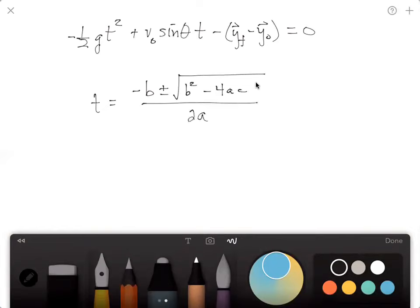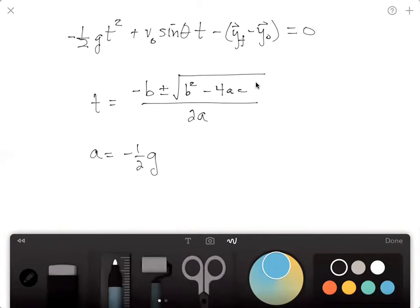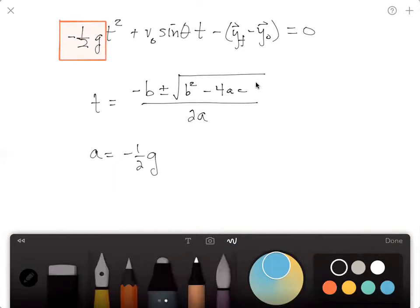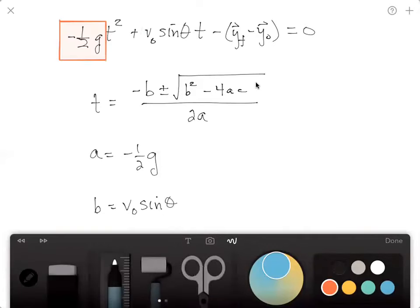Where a is just negative one half g. It is right here. And b is just equal to v_naught sine theta. Of course, this is right here.